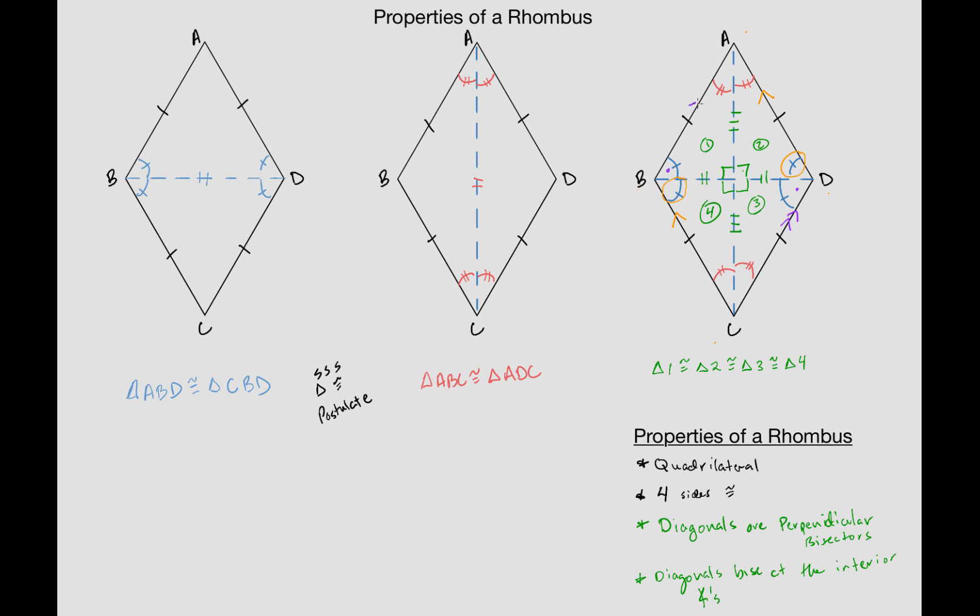And the easiest way to write all of that is just that the opposite sides—I'm going to make this bigger because there's so many properties—the opposite sides are parallel. And what that turns out to mean is that this is in fact a parallelogram.